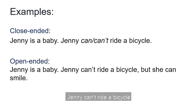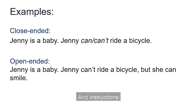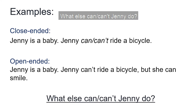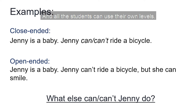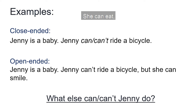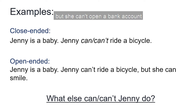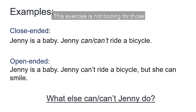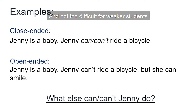'Jenny is a baby. Jenny can't ride a bicycle, but she can smile.' And the new instructions: 'What else can/can't Jenny do?' There could be lots of answers now, and all the students can use their own level — 'She can eat, but she can't open a bank account,' for example. This exercise is not boring for those who think it's too easy, and not too difficult for weaker students.